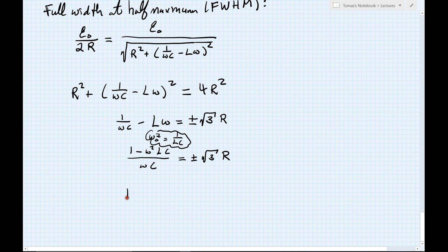to write it as omega plus some amount of displacement from omega naught. So let me write this as 1 minus, rather than omega squared, I will call it omega naught plus some amount of shift, delta omega, squared times lc, divided by omega naught plus delta omega times the capacitance c. And that then has to equal plus or minus root 3 times r.